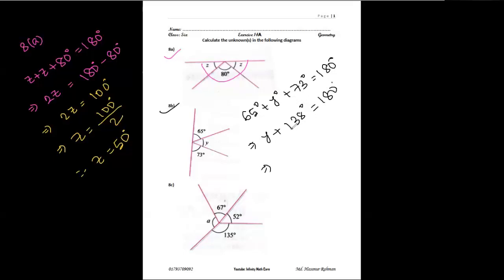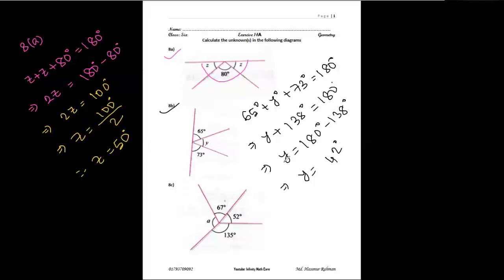Now we move 138 to the other side. So y equals 180 degrees minus 138 degrees. After subtracting 138 from 180, we get 42 degrees. So the value of y is 42 degrees.